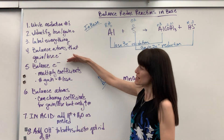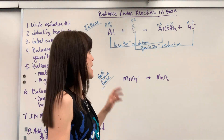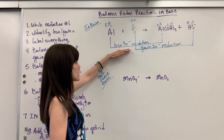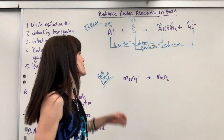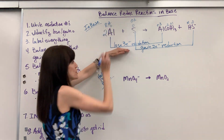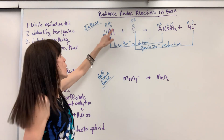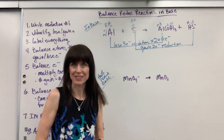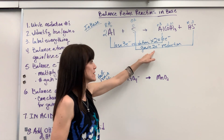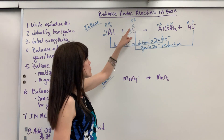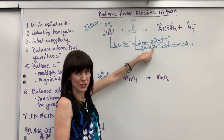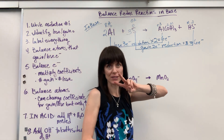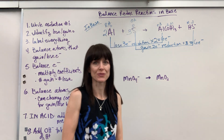Now we can balance the electrons — step five. We're going to use coefficients. The goal is to get the smallest number possible where electrons gained equals electrons lost. We have three electrons lost and two that are gained. The smallest number both go into is six. So I multiply the three by two: put two on the aluminum. One aluminum loses three electrons, so two aluminums lose six electrons total. For sulfur: one sulfur gains two electrons, but I multiply by three. Three sulfurs times two electrons each means six electrons total are gained. Electrons are balanced.